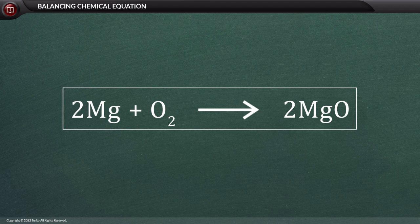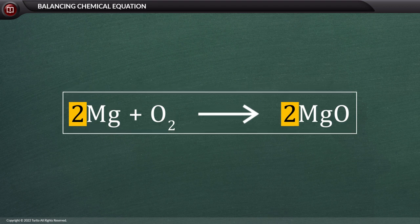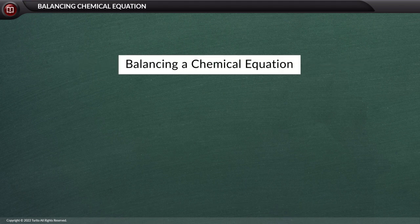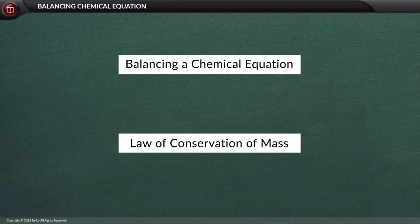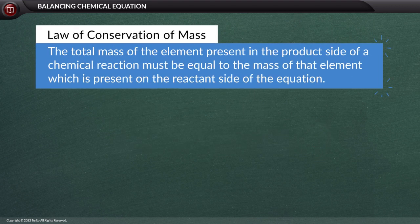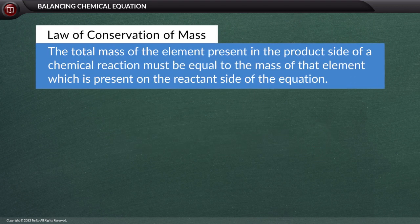Where does the number prefix to each of the reactants and products in a chemical reaction come from? We can know that when we learn how to balance a chemical equation. The concept of balancing a chemical equation comes from the law of conservation of mass. According to the law of conservation of mass, the total mass of the element present in the product side of a chemical reaction must be equal to the mass of that element which is present on the reactant side of the equation.